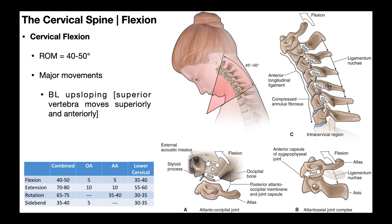Over here, we have a blown-up version of the cervical spine. Up here is C1, the atlas. Remember, the atlas does not have a spinous process — it actually just has a posterior tubercle. The spinous processes start at C2. Remember that there is a broad ligament-like structure that connects all the spinous processes down to C7. That's the nuchal ligament, also called ligamentum nuchae in Latin.